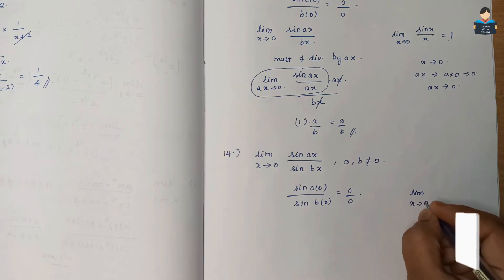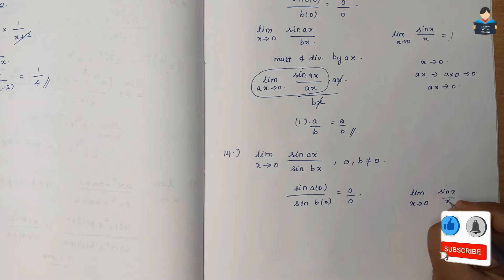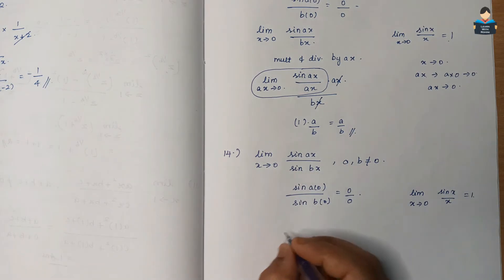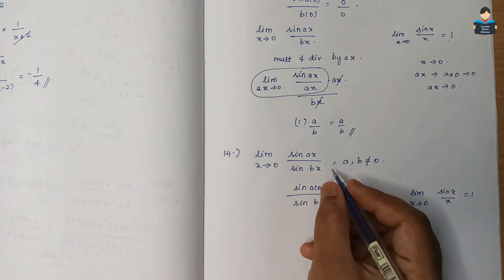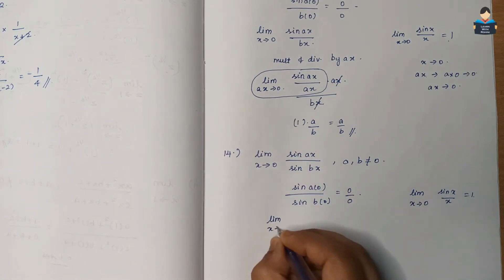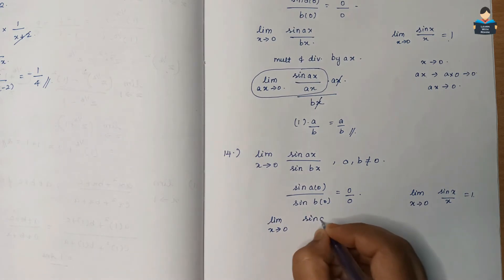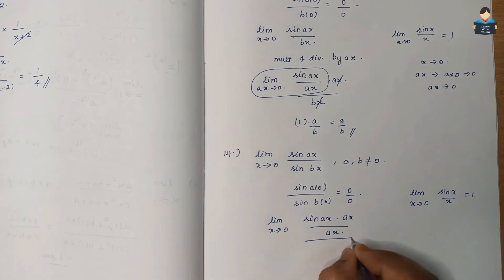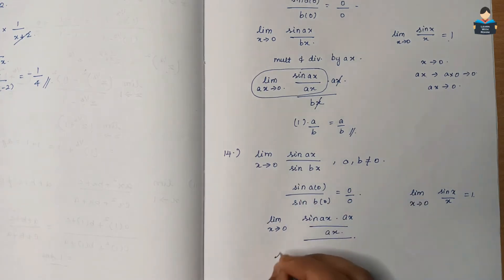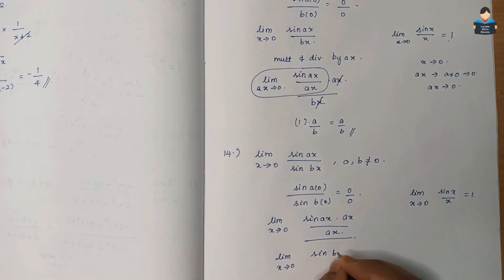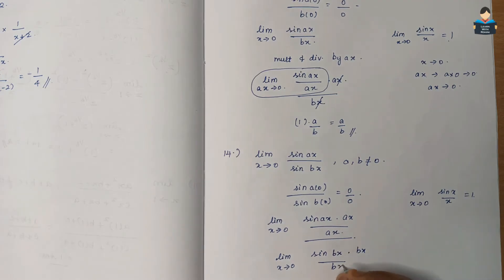We use the identity limit sin(x)/x = 1. So limit x tends to 0 of sin(ax)/sin(bx) — we multiply and divide the numerator by ax, and for the denominator we multiply and divide by bx.